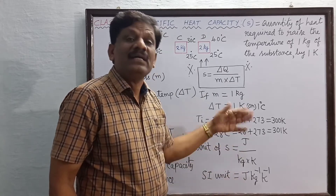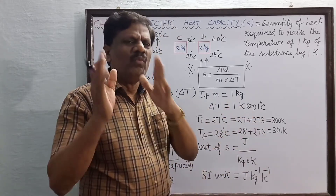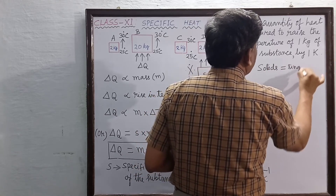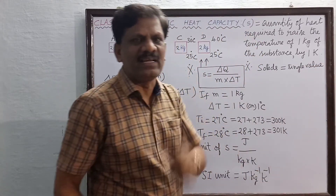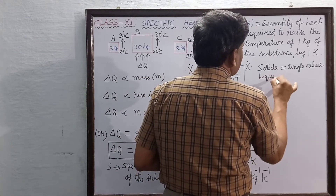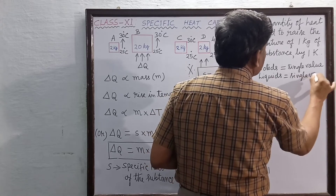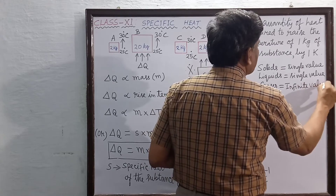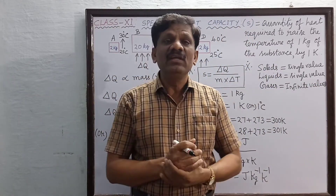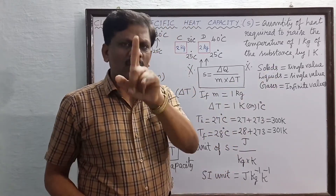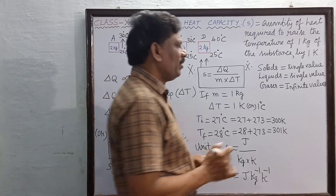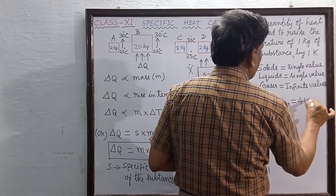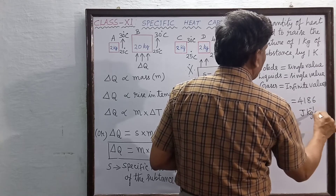An important fact: solids have only a single value of specific heat capacity, and liquids also have a single value. Gases, however, have infinite values of specific heat capacity. Among all liquids, the specific heat capacity of water is the highest — it is 4186 joule per kilogram per kelvin.